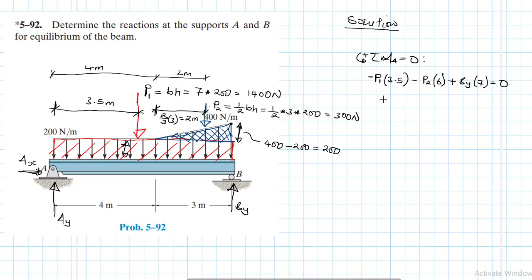So let's replace in the values there. We have P1, that's minus 1400 by 3.5, minus P2 which is 300 by 6, then plus BY by 7 is equal to 0.